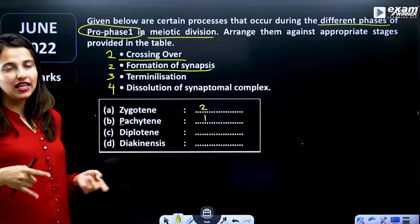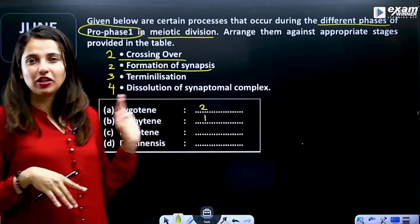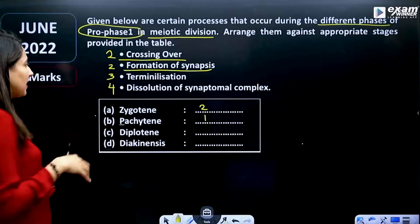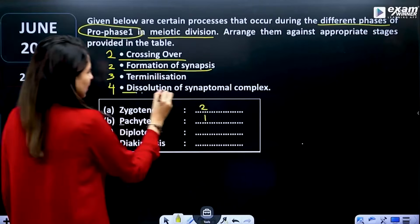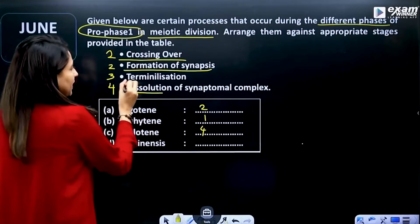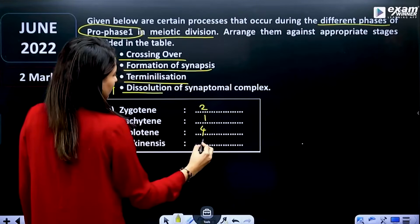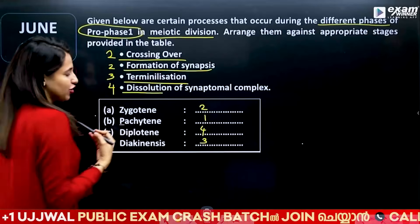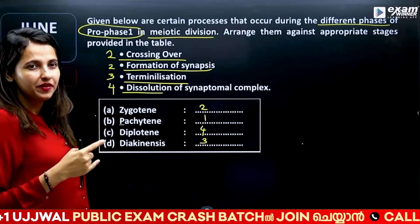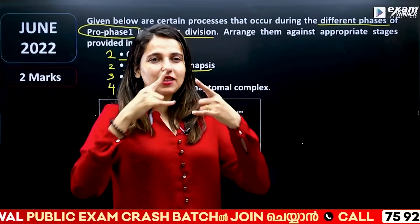Diakinesis involves dissolution. Chiasmata formation occurs, followed by dissolution of the synaptonemal complex at Diakinesis, and terminalization of chiasmata.